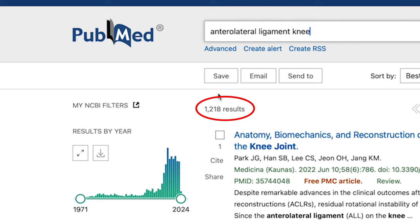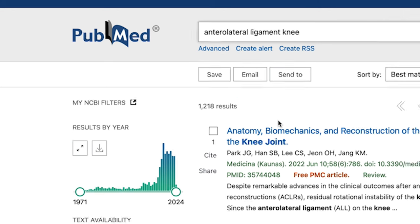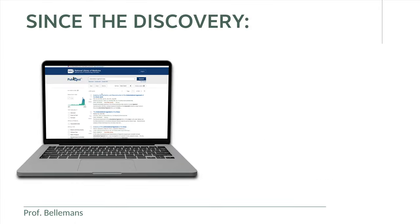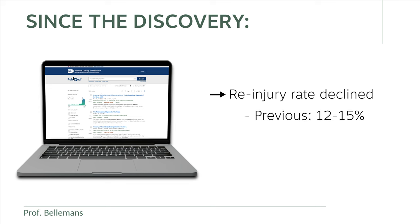Probably its biggest impact is that, since this knowledge on the anterolateral ligament has become available, the way we operate ACL re-ruptured patients has changed so dramatically that the re-injury or re-rupture rate after ACL reconstruction has now decreased from 12–15% to only 2–3%, which is really a dramatic improvement.